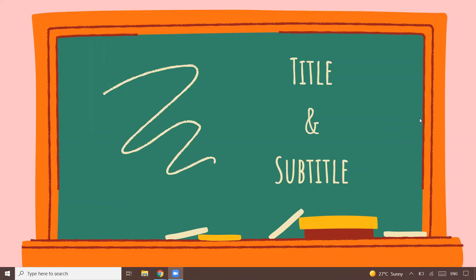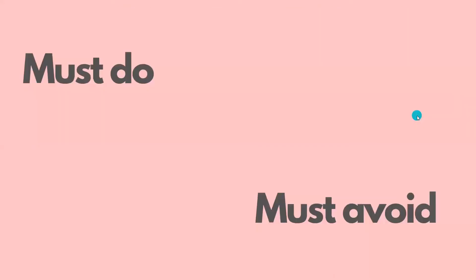Hey everyone, welcome back to my channel. This video is going to be about a very basic topic: KDP low and no content publishing books — specifically about KDP book title and subtitle. Title and subtitle are the key ingredients of any book you publish on KDP. We're going to look at the important aspects of what you must do and what you must avoid when publishing your low and no content books on Amazon KDP.